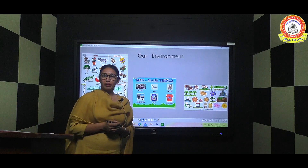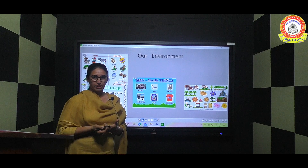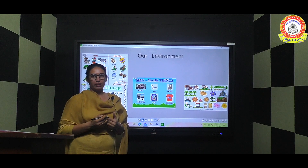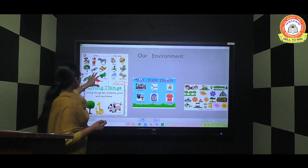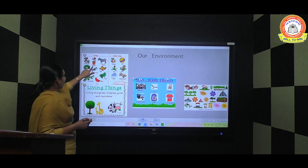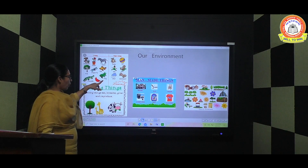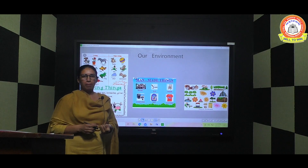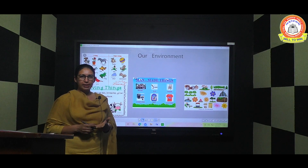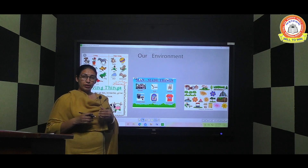First, let's discuss living things. Living things are the things which have life. Here you can see examples: mushroom, flower, zebra, tree, dragonfly, fish, crocodile, bird, frog. So all animals, plants, human beings, birds, and insects are living things.